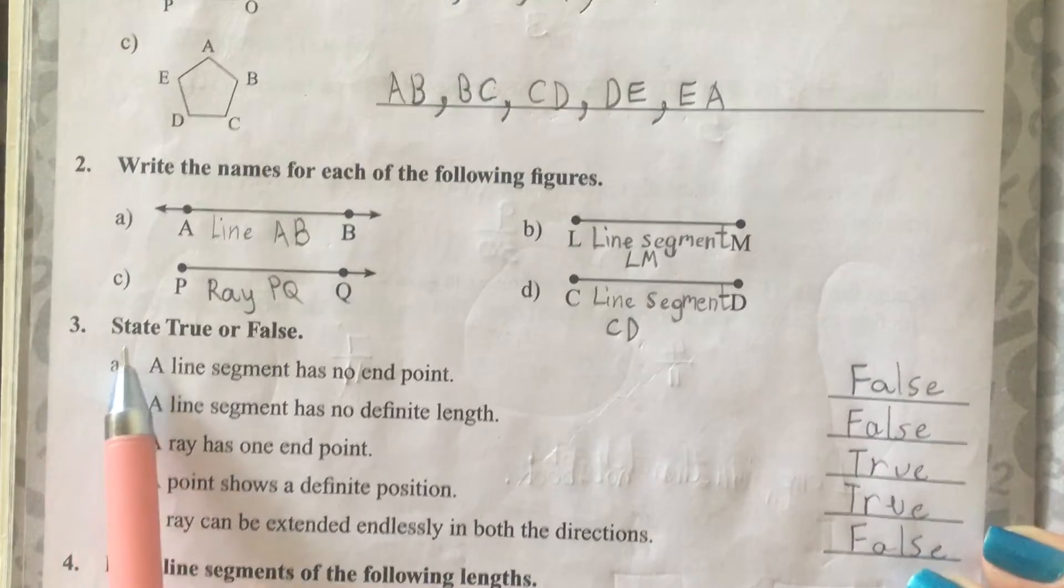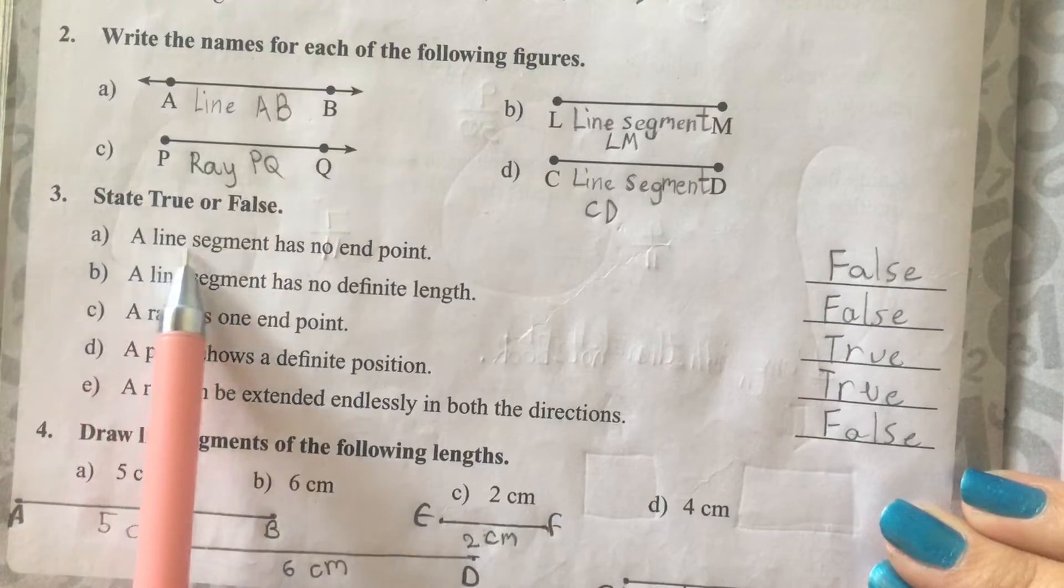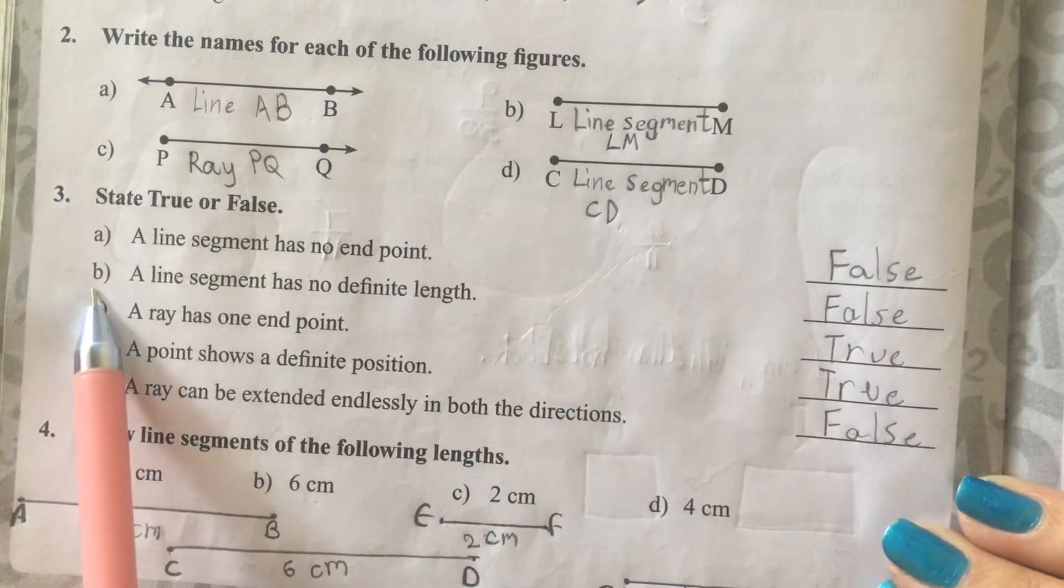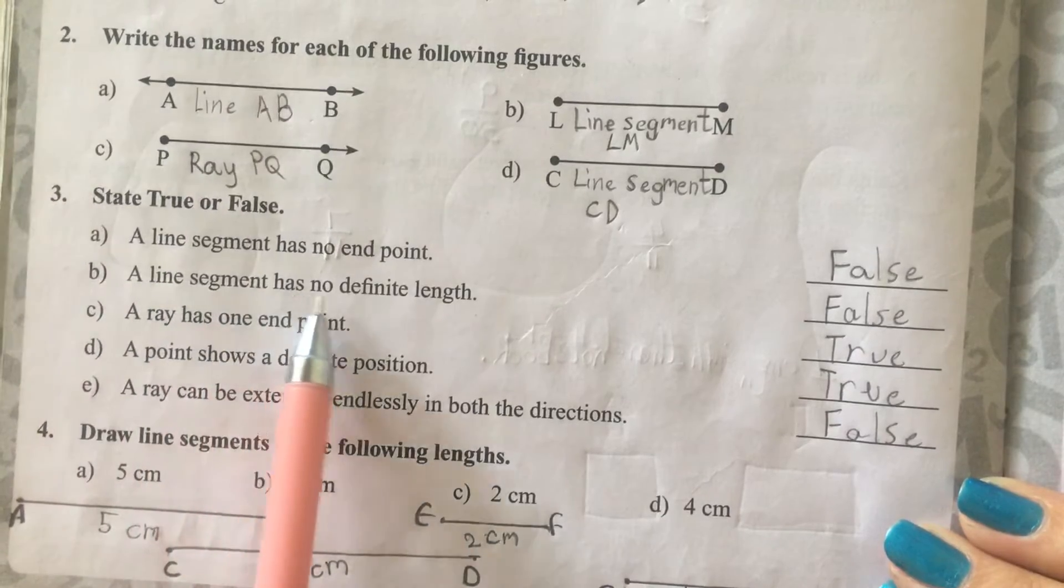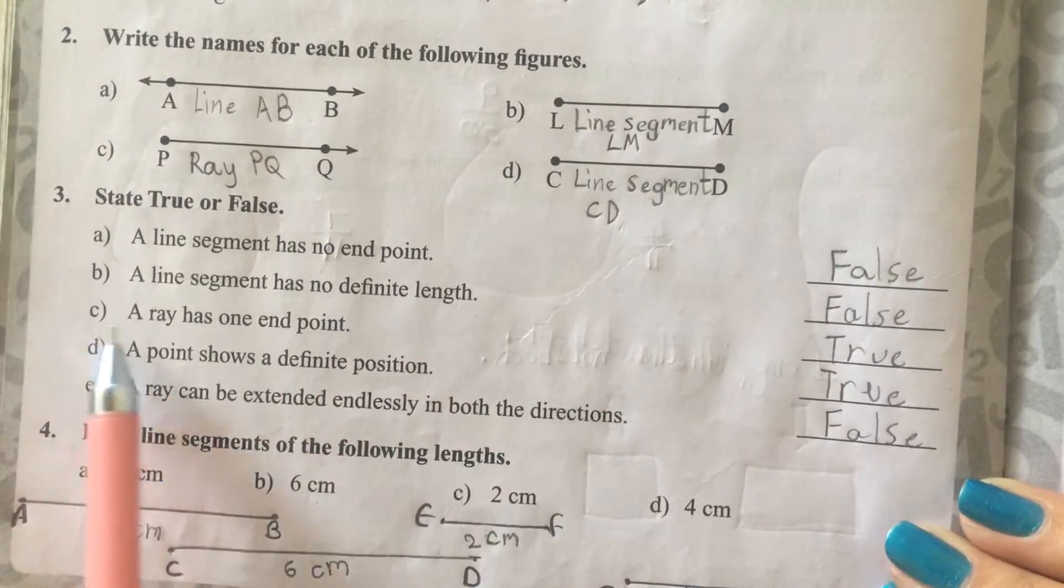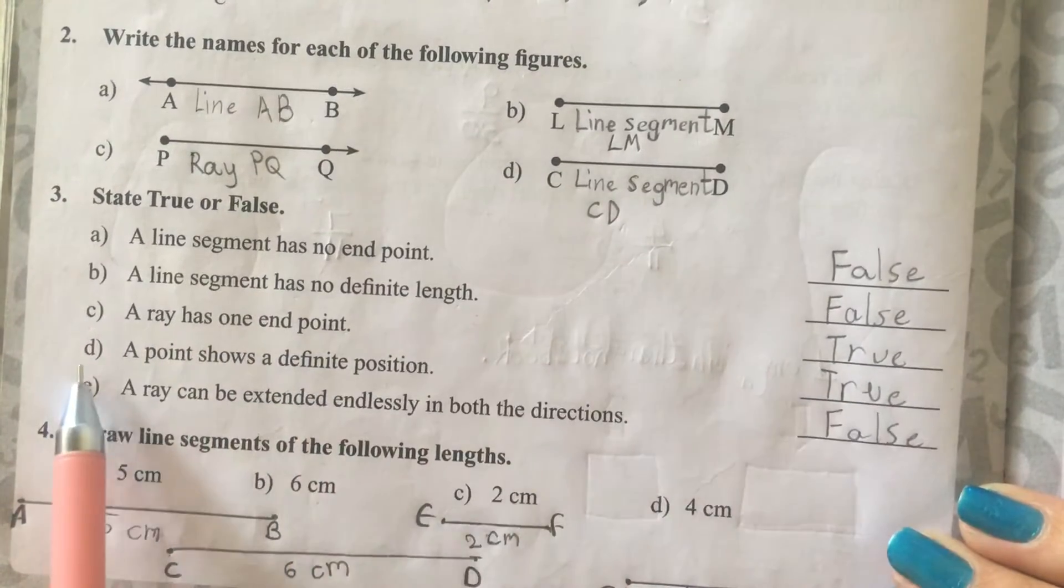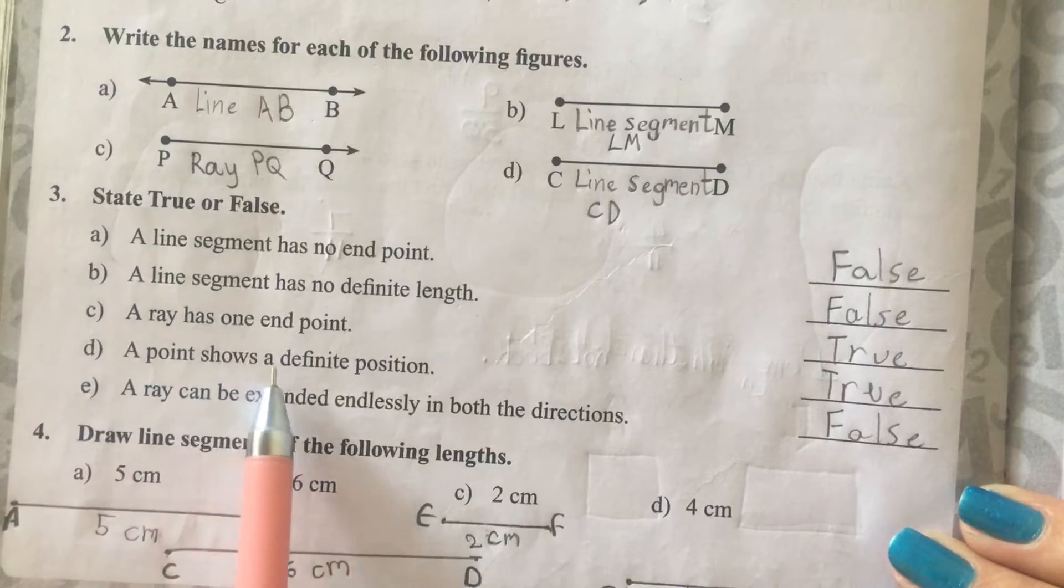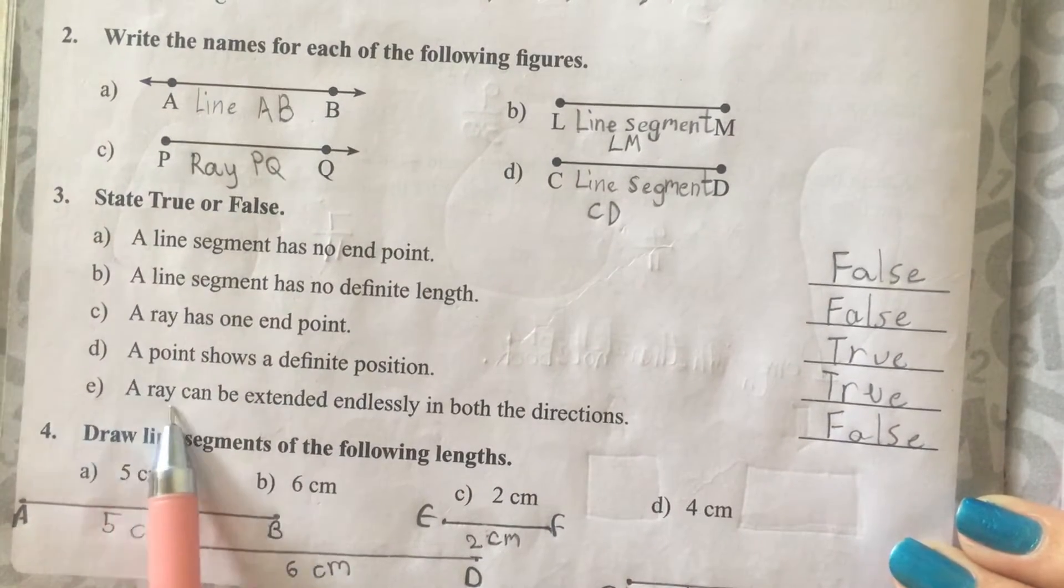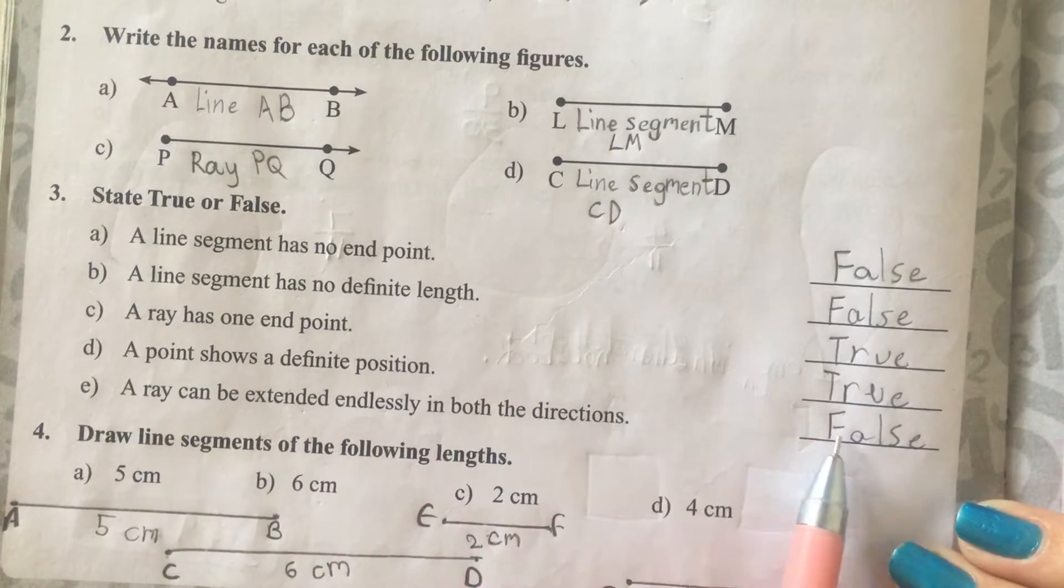3. State true or false. A. A line segment has no end point. False. B. A line segment has no definite length. False. C. A ray has one end point. True. D. A point shows a definite position. True. E. A ray can be extended endlessly in both the directions. False.